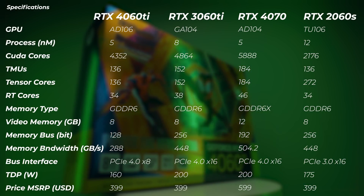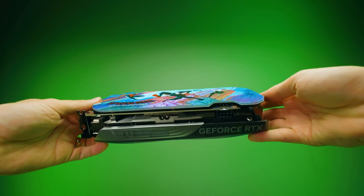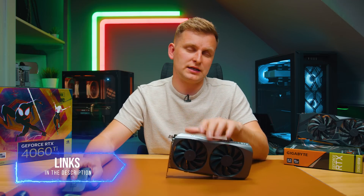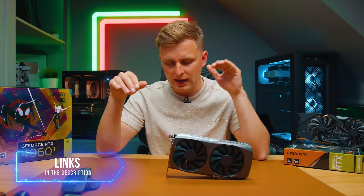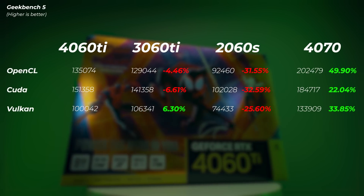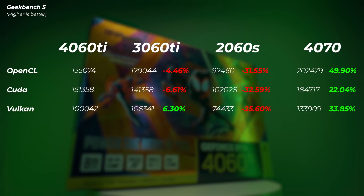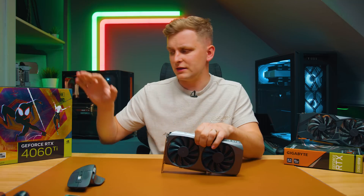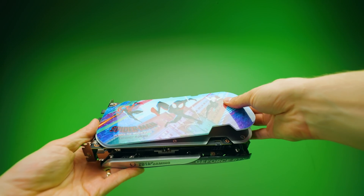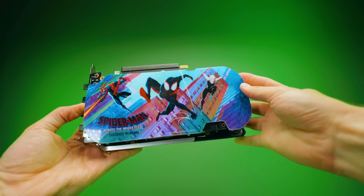The TDP is 160W and the MSRP is $399 — the same as the previous generation. On the surface it looks like Nvidia hasn't increased pricing while delivering a new generation. First benchmark: GeekBench 5, a generic GPU test. By the way, this is the Spider-Man version — there's a themed back plate included as a collaboration with the new Spider-Verse movie, at exactly the same MSRP price.